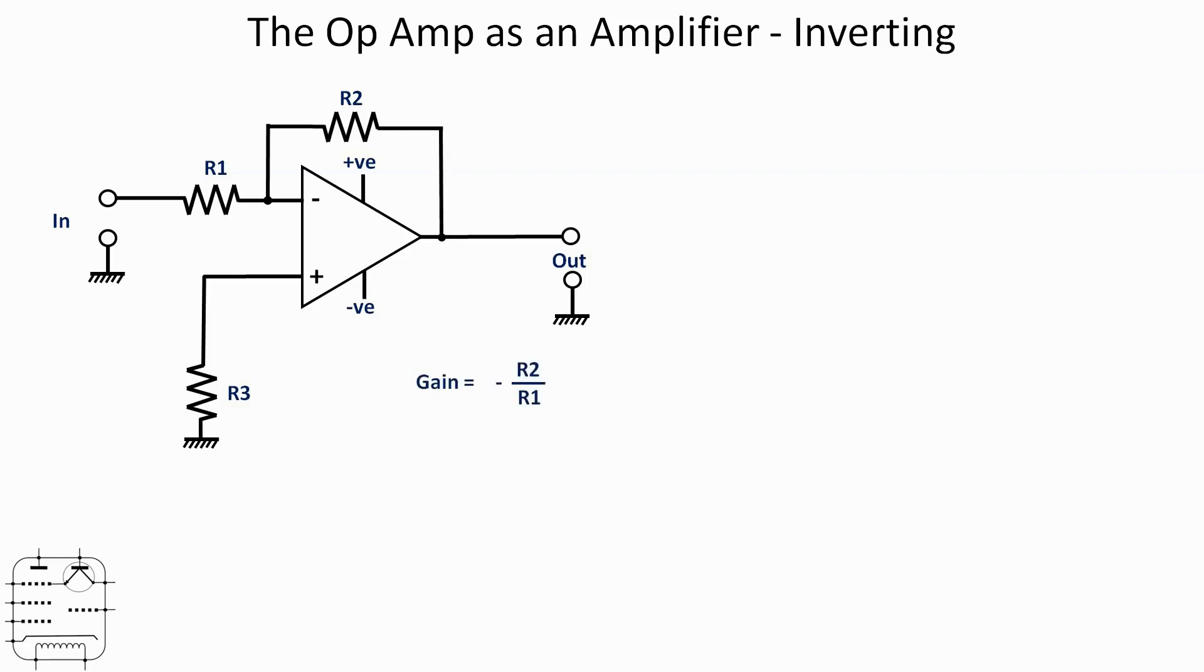I emphasize that because to calculate the gain this time it's minus R2 over R1, and it's minus because at any moment in time the input waveform will be 180 degrees out of phase with the output. In other words, it'll be the opposite, or minus if you like.